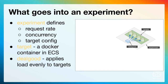An experiment defines a particular request rate and a concurrency — the concurrency is basically the number of requests that are in flight at any one time. Each target, which are the container instances, is configured differently and the experiment describes how those things are configured. It may be that just one config setting is different between each target, so you're doing a comparison of different values for a particular config setting, or it may be that each target has a different base image with different versions of software or entirely different pieces of software being compared against one another.